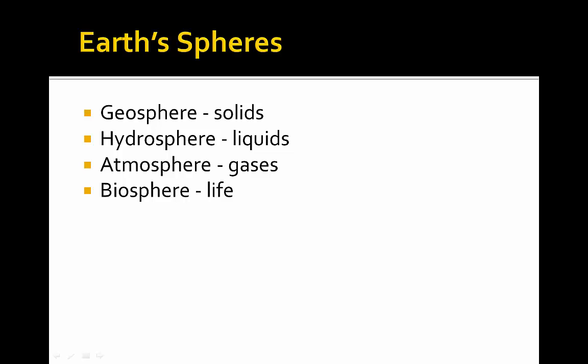Now your book talks about the four major spheres of Earth: the geosphere, the hydrosphere, the atmosphere, and the biosphere. The geosphere is all the rocky material. Hydrosphere means the oceans and all the water. Atmosphere is all the gases. Biosphere is everything that's alive. The easy way to keep these separated: geosphere is solids, hydrosphere is all the liquids — which on Earth is almost exclusively water — atmosphere is all the gases, and then biosphere is a combination of solids, liquids, and gases that create various forms of life.